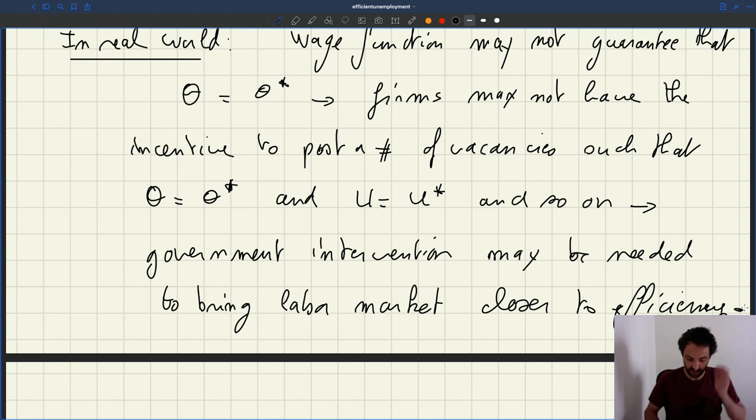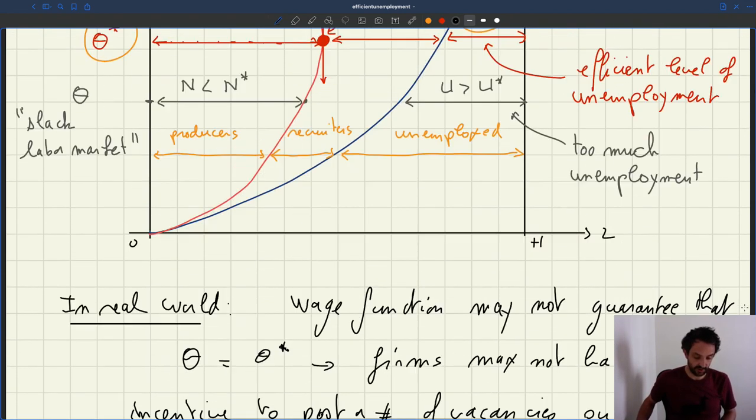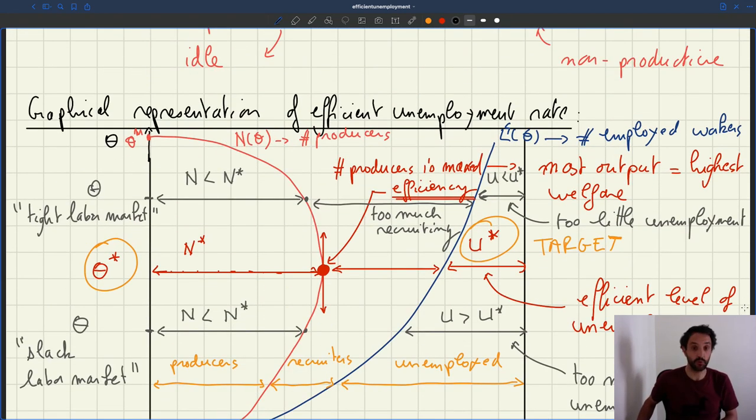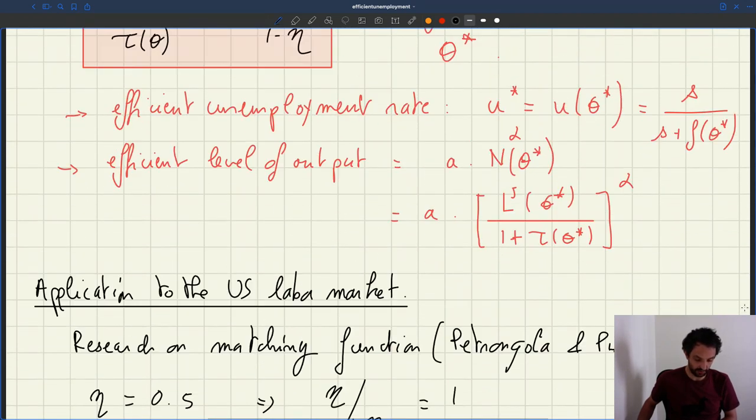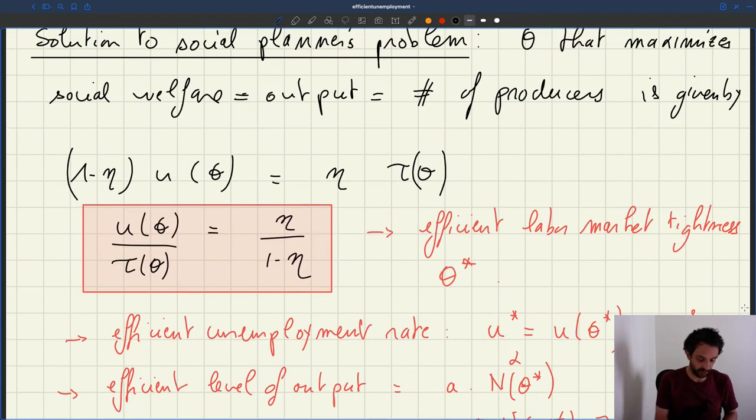At that point where efficiency is reached is the point we've just described where the number of producers is maximized on the curve we've seen here, with the conditions that we've introduced here, that it's a point that is described by u of theta over tau of theta is equal to eta over 1 minus theta. So this is our efficiency condition.